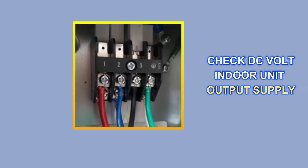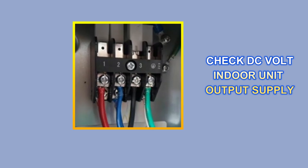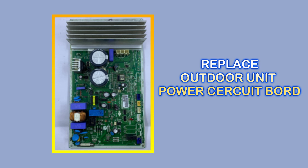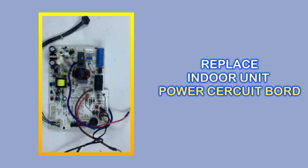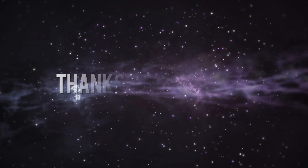If the same color code wire is installed and the error is still coming, then another reason could be: first, turn on the indoor unit and open the wiring cover of the outdoor unit. Now check the DC voltage at the output supply of the indoor unit. If the indoor unit is providing DC output supply and you are still getting this error, then you will have to replace the PCB of the outdoor unit. If the indoor unit is not providing output supply, then you have to replace the power circuit board of the indoor unit. After that, this error will be completely fixed.